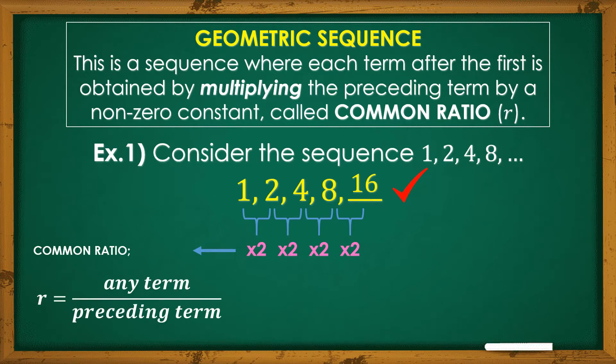How to get the common ratio? Let's use this simple formula. R equals any term divided by preceding term. Kadalasan yung ginagamit sa any term ay yung mga pangalawa, pangatlo, and so on and so forth. Let's try a sub 2 and a sub 1. R equals a sub 2 over a sub 1 will be our first solution in getting the common ratio. a sub 2 is 2, a sub 1 is 1. So 2 divided by 1 is 2.